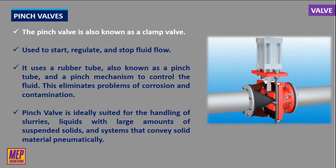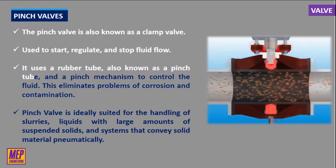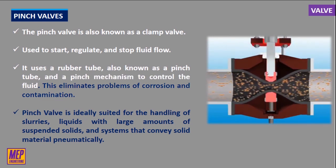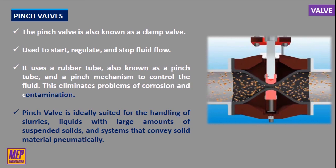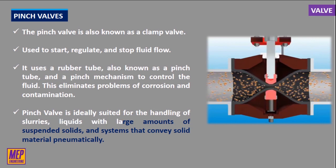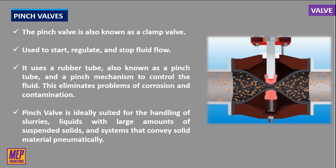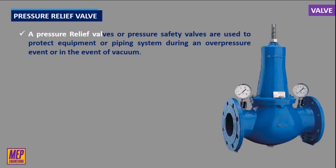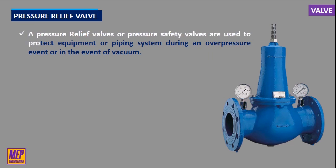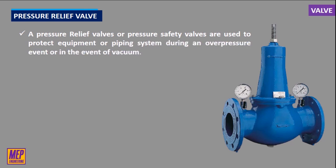The pinch valve, also known as a clamp valve, is a linear motion valve used to start, regulate, and stop fluid flow. It uses a rubber tube, also known as a pinch tube, and a pinch mechanism to control the fluid, which eliminates problems of corrosion and contamination. Pinch valves are ideally suited for handling slurries, liquids with large amounts of suspended solids, and systems that convey solid material pneumatically. Pressure relief valves, or pressure safety valves, are used to protect equipment or piping systems during an overpressure event or in the event of vacuum. This valve releases the pressure or vacuum at a predefined set pressure.